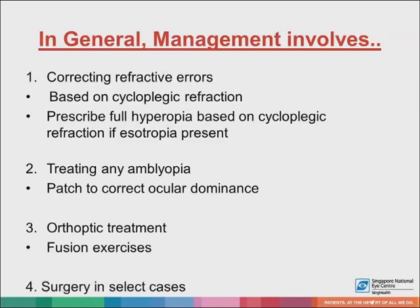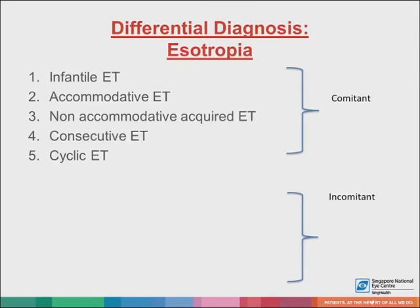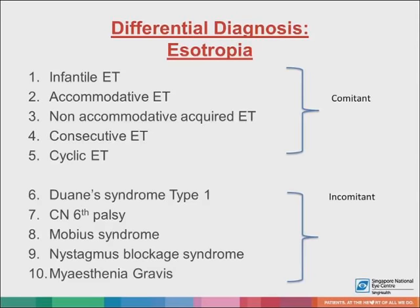Surgery may be considered in select cases. When you see a child with esotropia, it helps first to decide if the strabismus is comitant or not. Comitant causes could be infantile esotropia, accommodative esotropia, non-accommodative acquired esotropia, consecutive esotropia if there was a history of surgery and previous exotropia, or cyclic esotropia if it was intermittent — which is quite rare. Incomitant causes can be due to Duane syndrome type 1, cranial nerve 6 palsy, Möbius syndrome, nystagmus blockage syndrome, or myasthenia gravis.